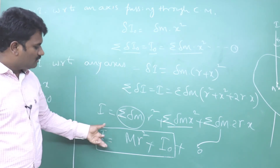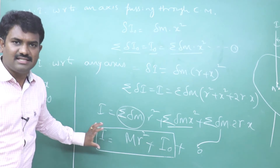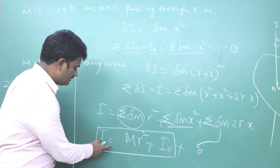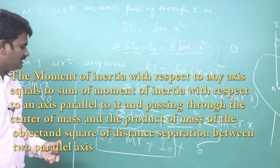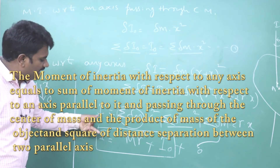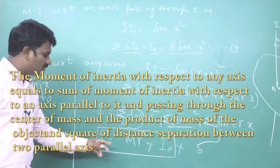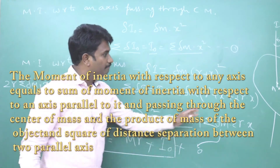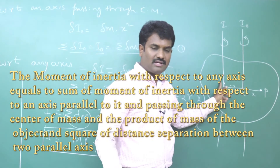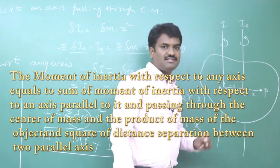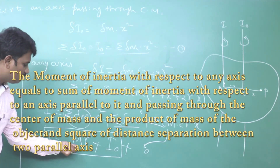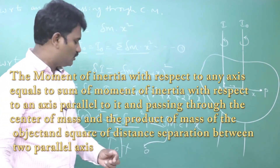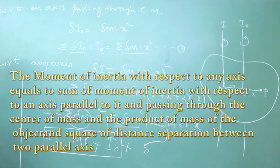So we are left with I = I₀ + Mr². This is our parallel axis theorem. Now from this equation we can read the statement: I is the moment of inertia with respect to any axis; I₀ is the moment of inertia with respect to a parallel axis passing through the center of mass; and Mr² is the product of the mass of the object and the square of the distance r between the two parallel axes.